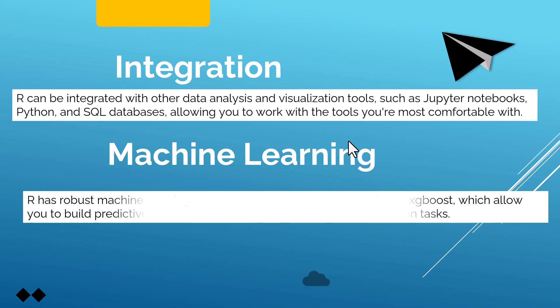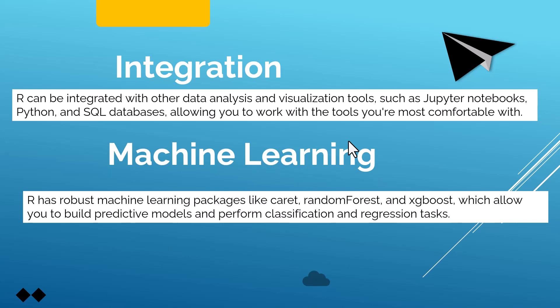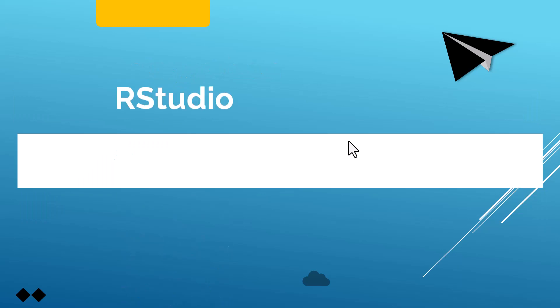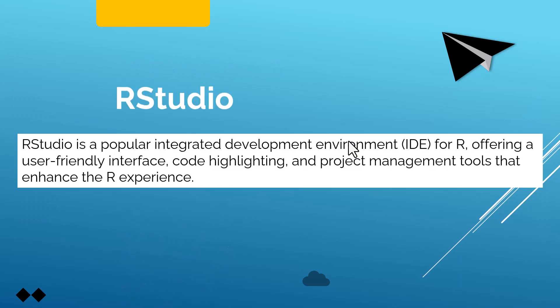Machine learning: R has robust machine learning packages like random forest, decision trees, and regression models, which allow you to build predictive models and perform classification and regression tasks. This is RStudio, which is a popular integrated development environment for R, offering a user-friendly interface, code highlighting, and project management tools that enhance the R experience.